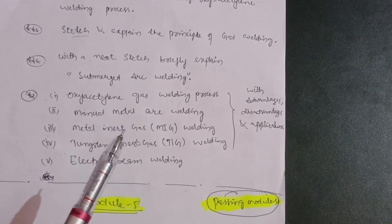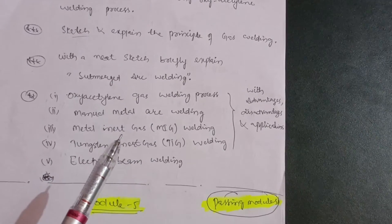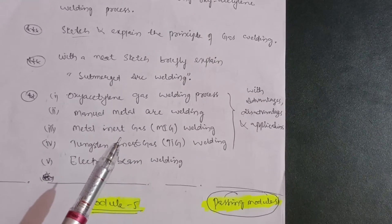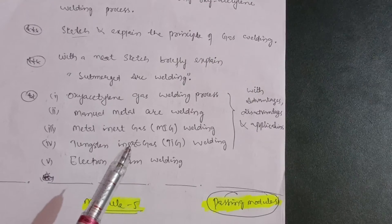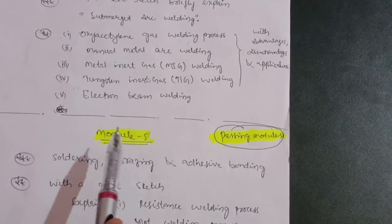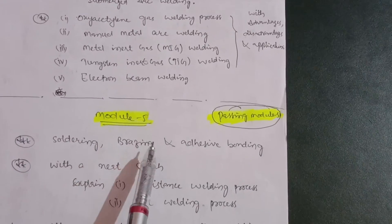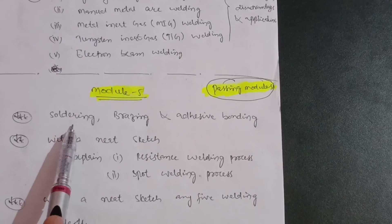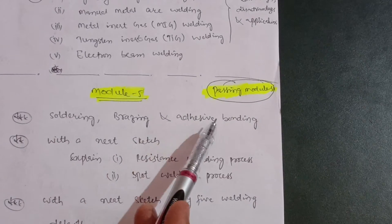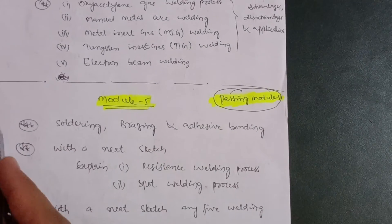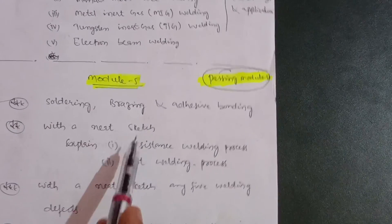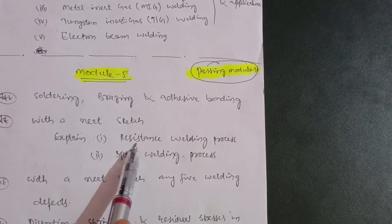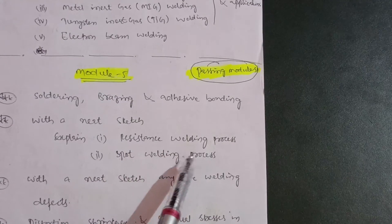This content is enough for Module 4. You will get at least 20 marks, or at least 15 marks, from this module. The next passing module is Module 5, in which you have to cover soldering, brazing, and adhesive bonding — the most important — and resistance welding / spot welding process with a neat sketch, which is also important.